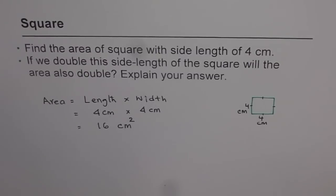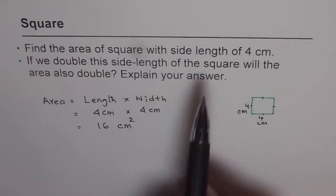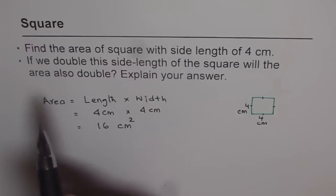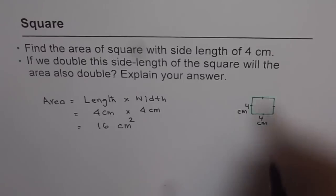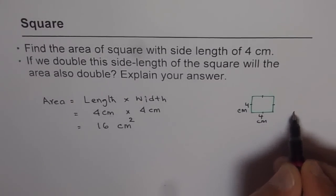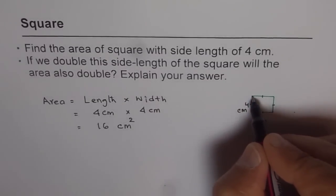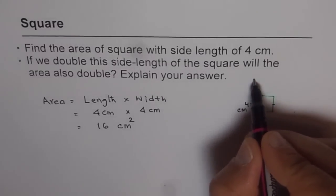The second part of the question is, if we double this side length of the square, will the area also double? Well, that we should think about. Double means, if this is my length of 4 and if I make it 8 like this, and here also, if I double my width, I make it like this, then what do I get?